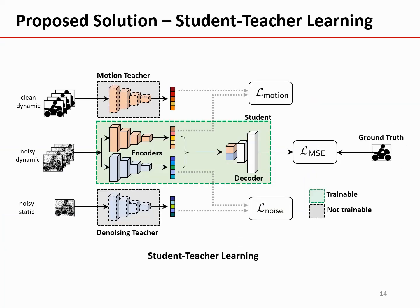Since kernel prediction networks and denoising networks can handle either clean dynamic sequences or noisy static sequences, we would like to leverage their strengths to address the dynamic low-light imaging. Therefore, we propose a student-teacher learning framework to solve this problem. This framework consists of three components: a teacher network for motion, another teacher network for denoising, and a student network that we are going to use eventually.